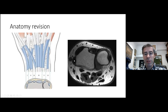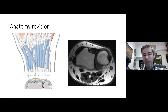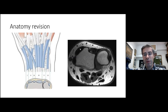For dorsal approaches to the wrist, we raise various compartments. If you're fixing a wrist fracture you'll need to raise the fourth compartment and the interval between the first and second for second-column plating. If you're doing something to the back of the wrist joint itself, you'll need to raise the second and fourth. Depending on what you're doing, you'll determine which tendons to raise off the distal radius and the wrist capsule.